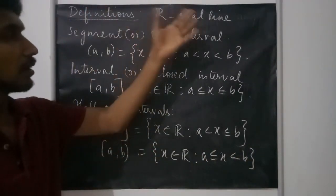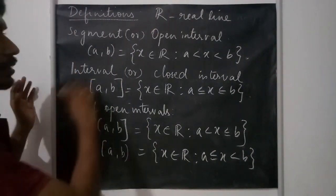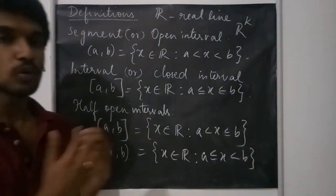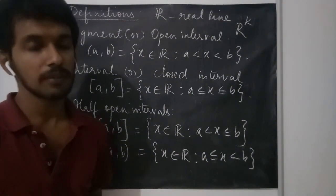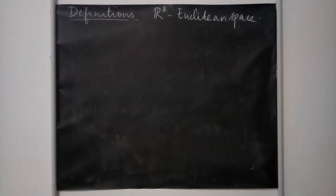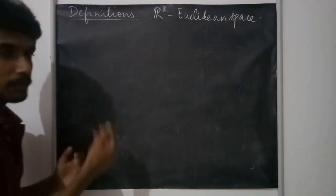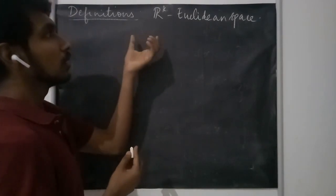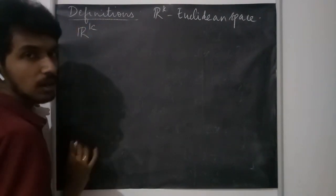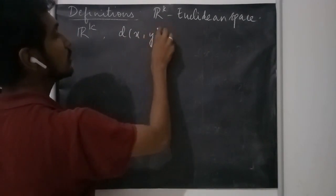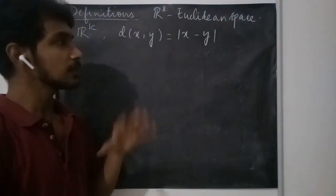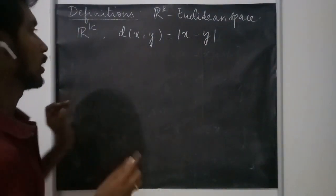These are defined on the real line. If we want to extend these ideas to real space R^k — that is, Euclidean space — we will see how to do that next. All the upcoming definitions are considered in Euclidean space, where k can be any positive index. The metric defined here is |x - y|; we are working with this specific metric.